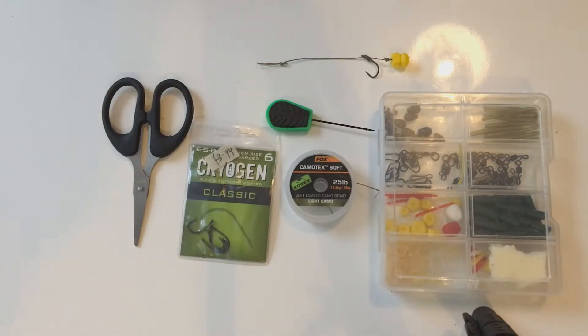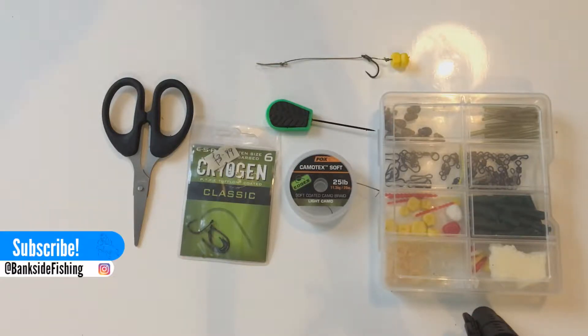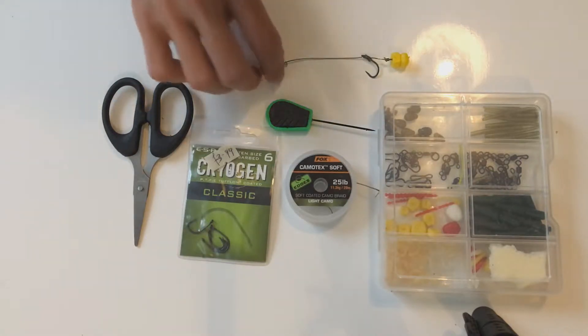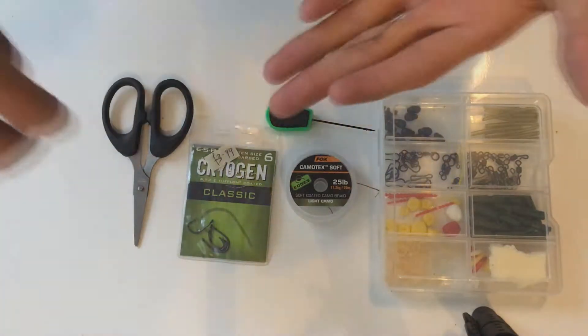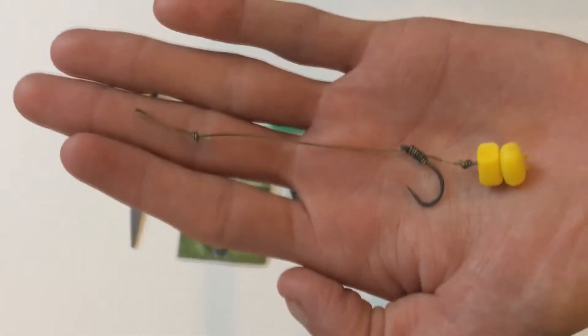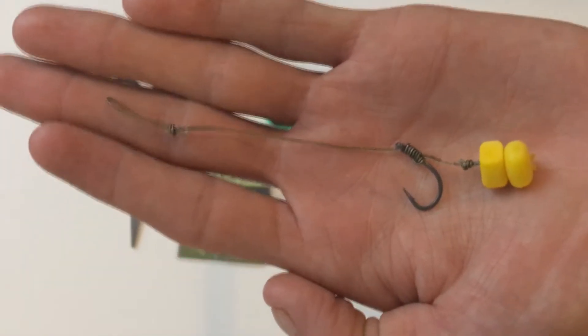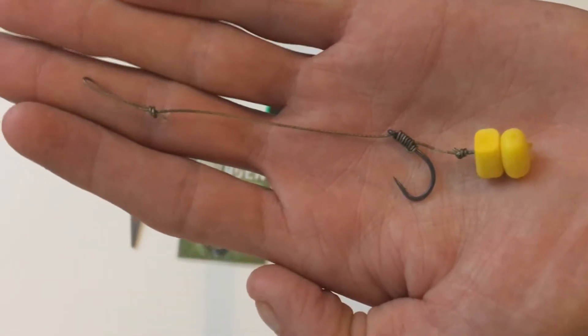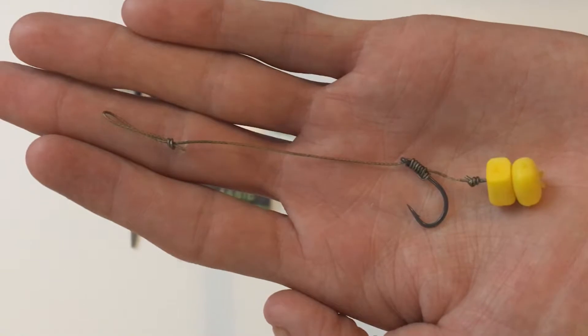All right guys and welcome back to Bankside Fishing. Today is a little bit of a different video. I'm going to be showing you my go-to PVA bag rig, which is this. If I just come around, try getting into focus, there we go. Very simple pop-up sweet corn rig, so we're going to be showing you how to tie it. Let's get started.